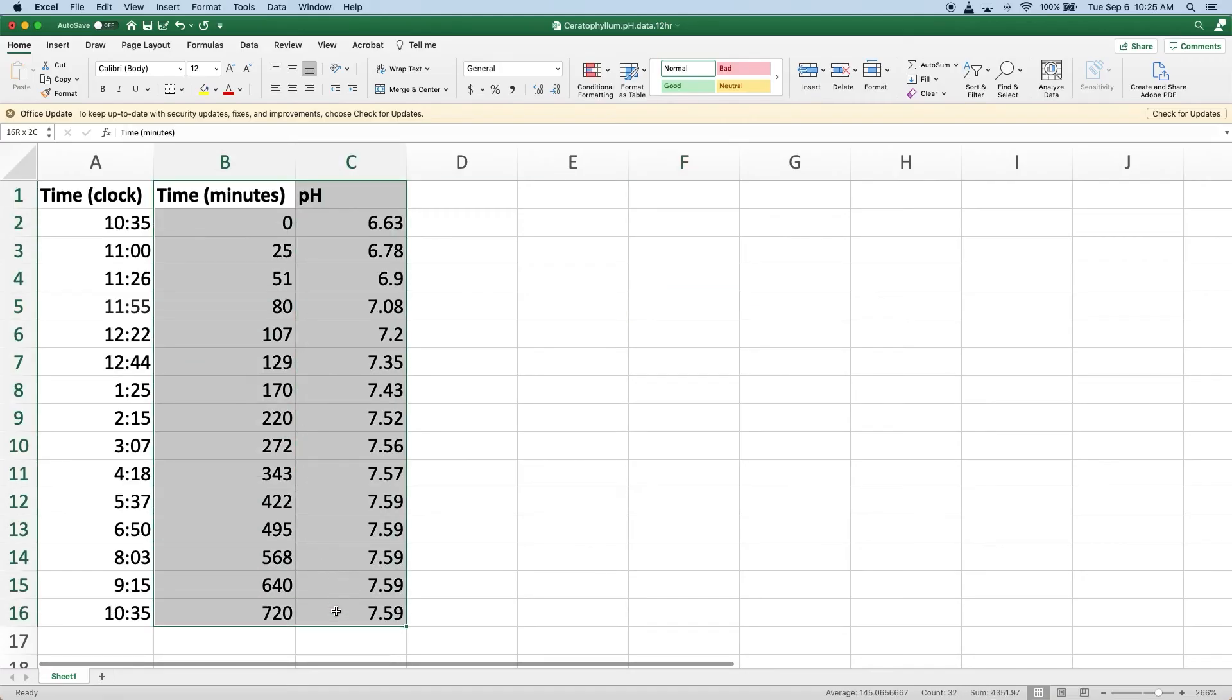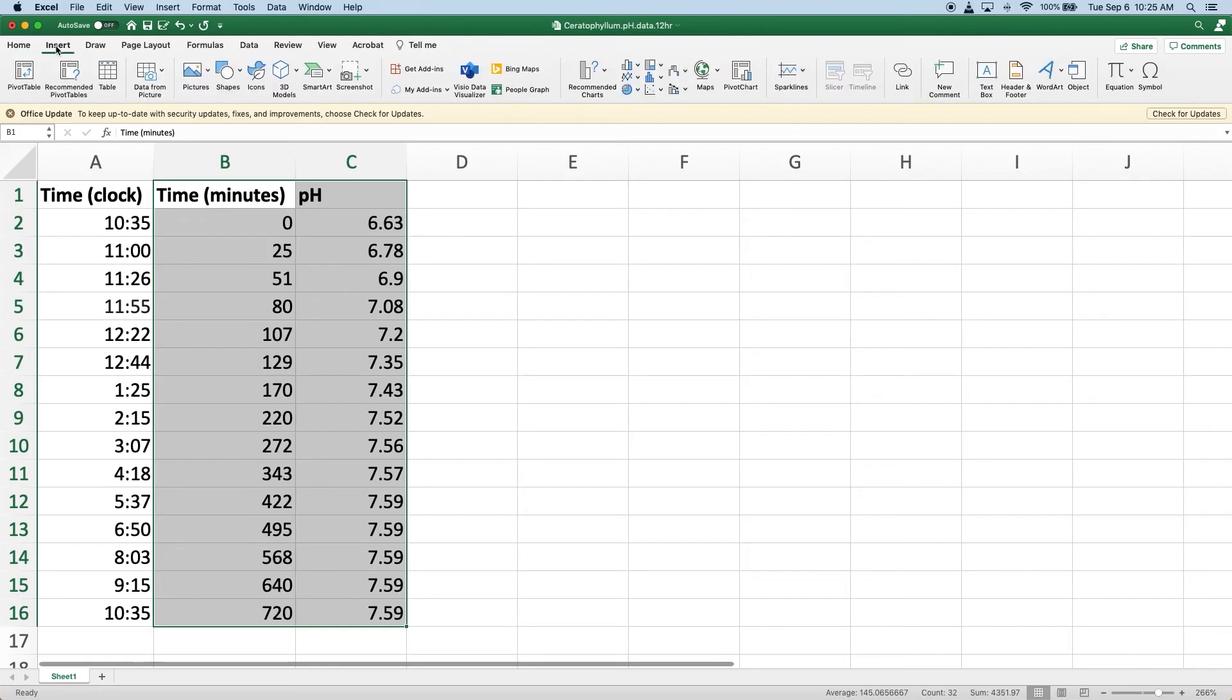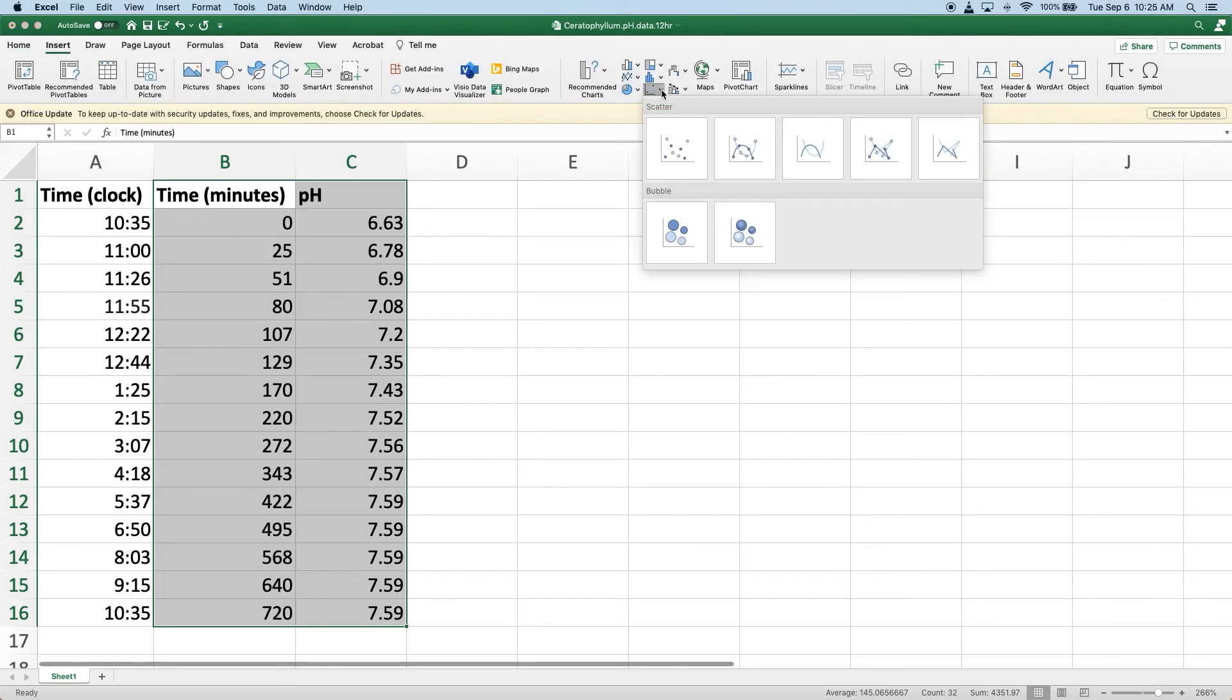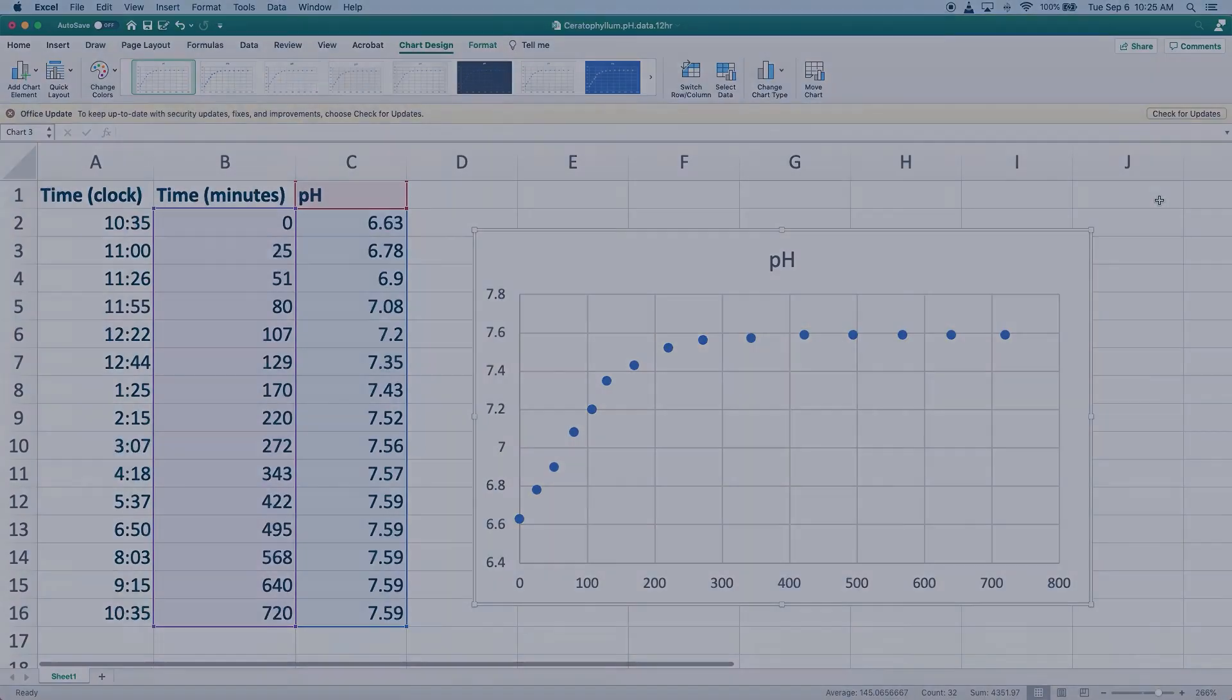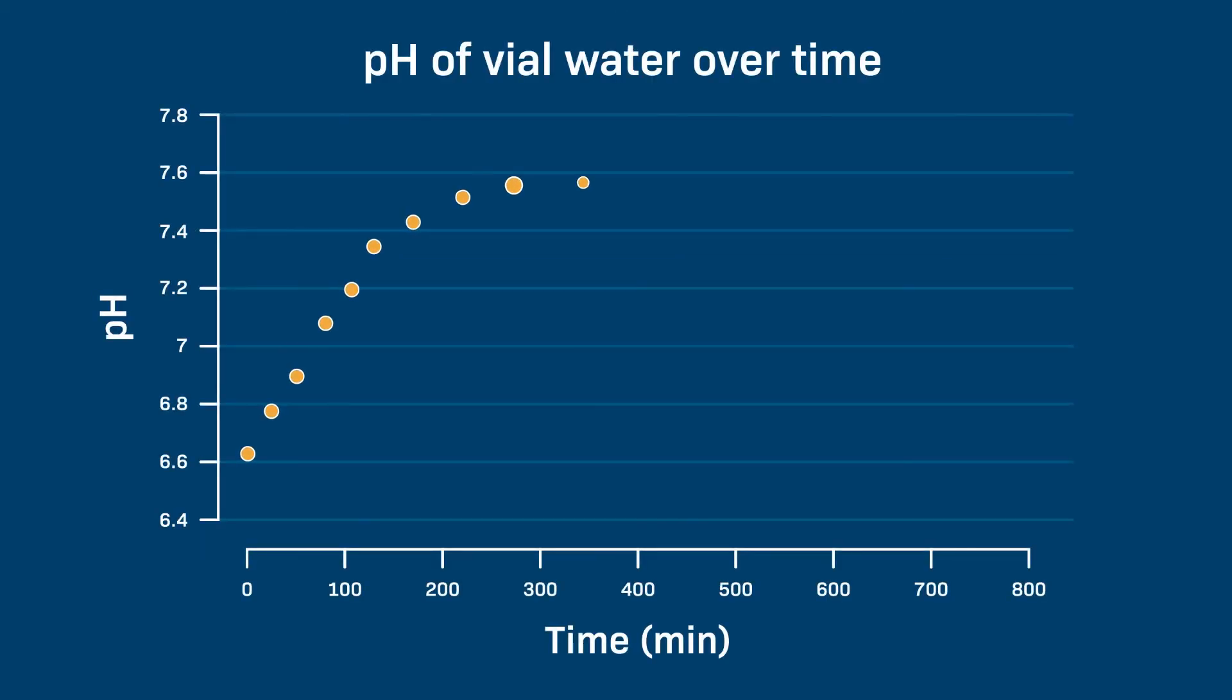So that was our qualitative data. Now let's take a look at our quantitative data, which will tell us exactly how much the pH changed, and what the pattern of that pH change was. Here are all of the pH measurements I took of the plant light vial. Using Excel, I'm going to plot time on the x-axis and pH on the y-axis. The starting pH was 6.63 and the final pH was 7.59, but the change didn't happen linearly.